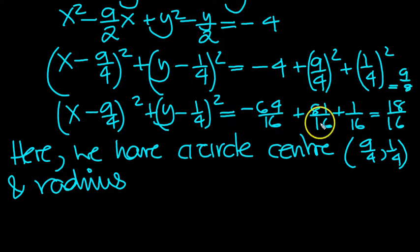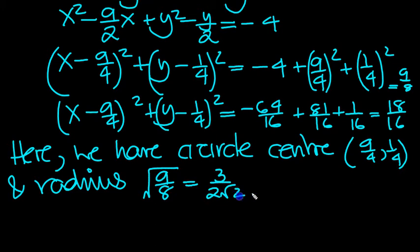And when you square root this is r squared of course so it's the square root of 9 eighths which is equal to the root 9 on top which is 3 over root 8 underneath which is 2 root 2 which we can write as 3 root 2, 3 quarters over 4, 3 quarters root 2.